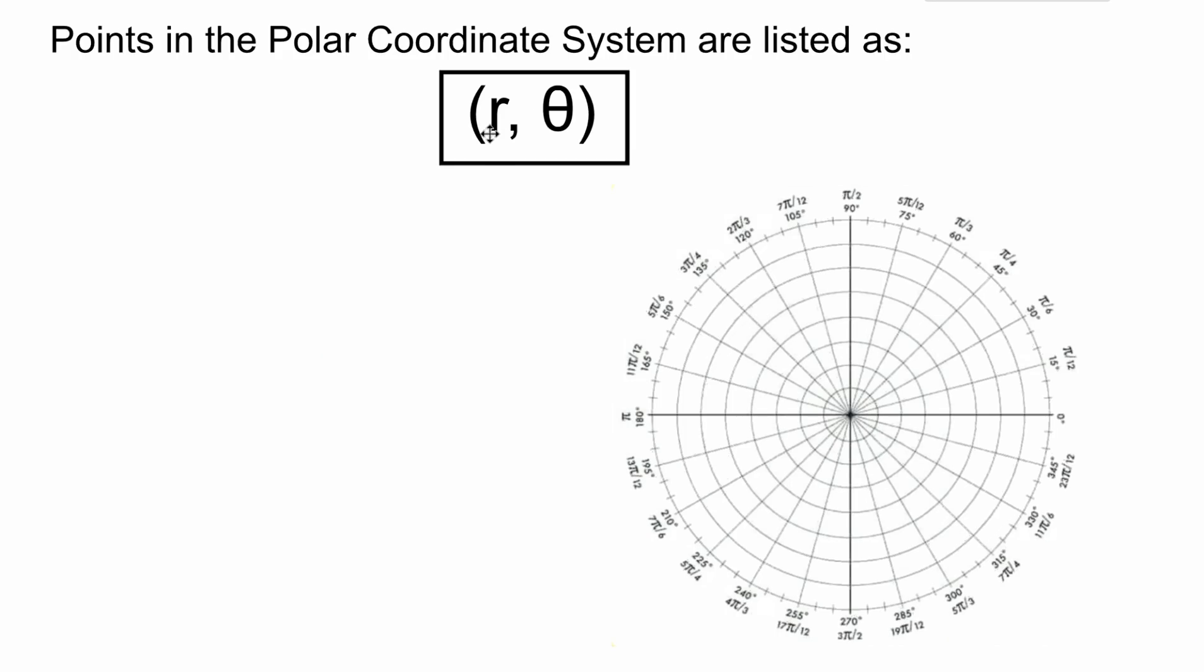Points in the polar coordinate system are listed as (r, θ). r stands for the radius. If we have a radius of 1, it's this mini circle inside. Each concentric circle is another radius. A radius of 6 would be out here, counting from the center: 1, 2, 3, 4, 5, 6. Everything on this circle has an r value of 6. Instead of x and y, it's r and theta for this polar system.